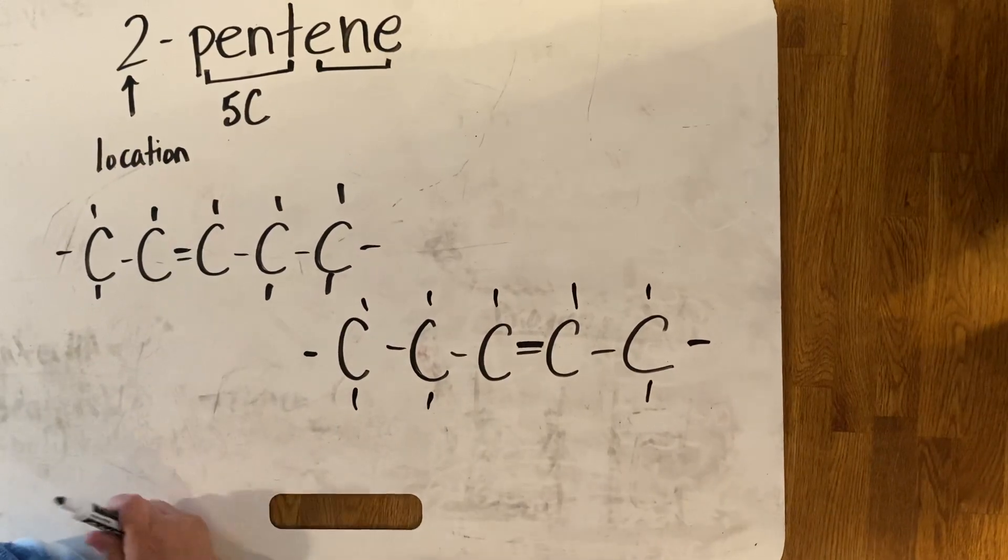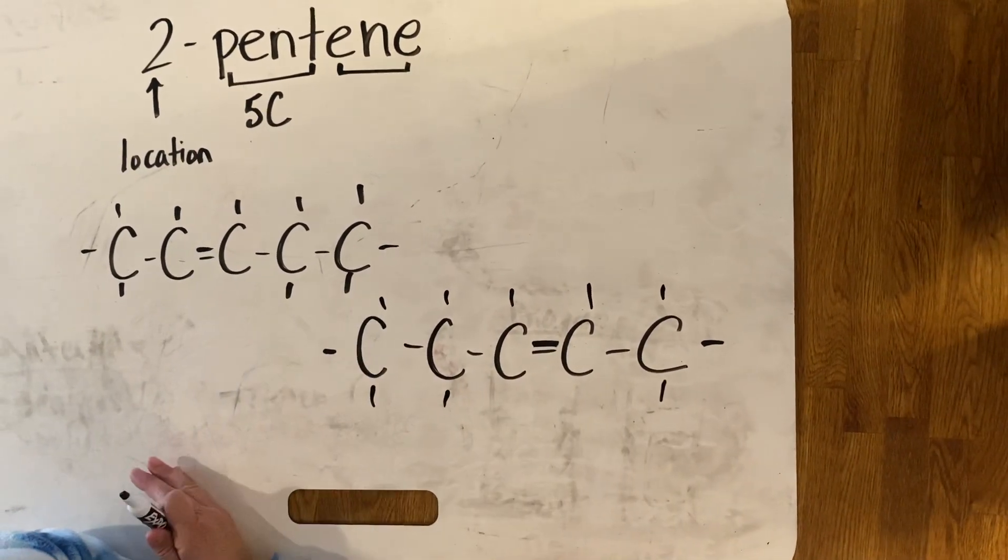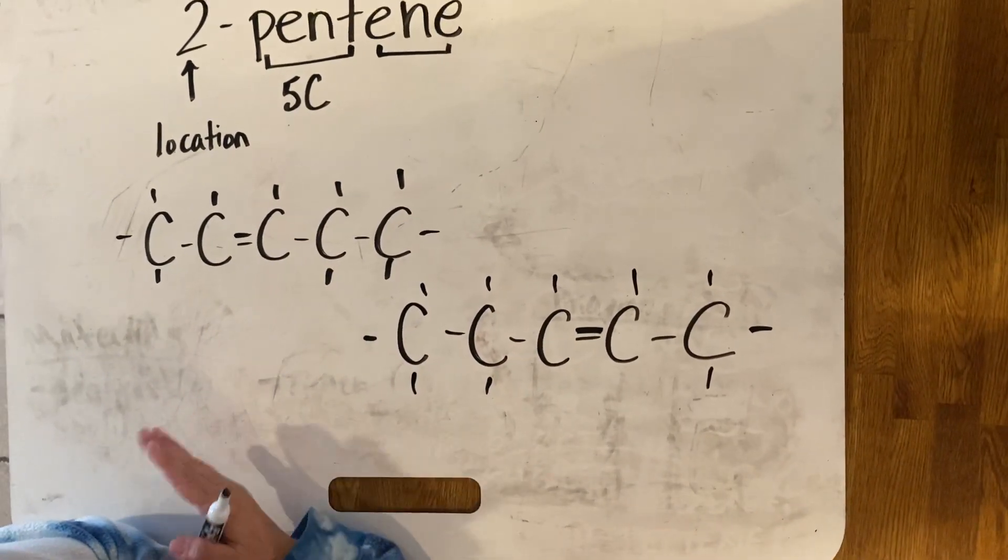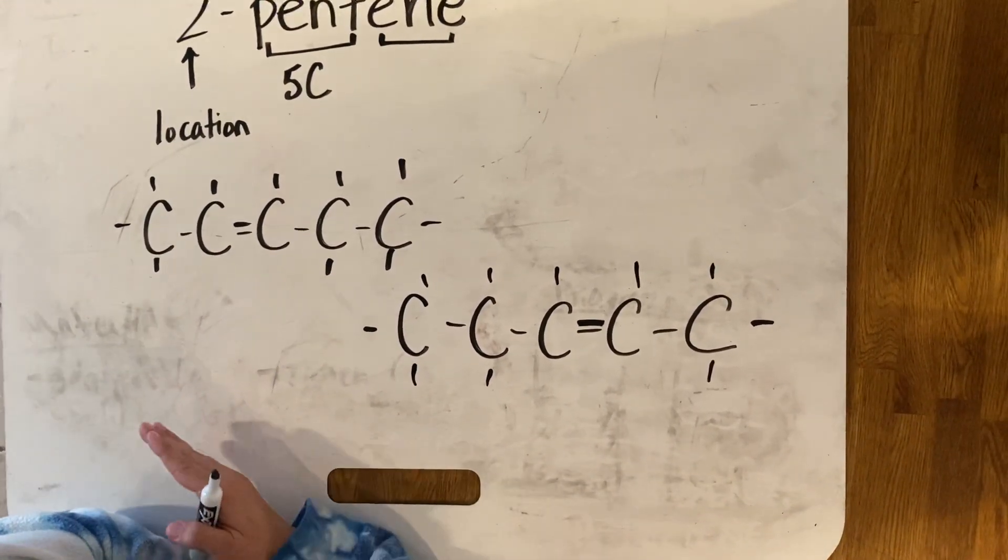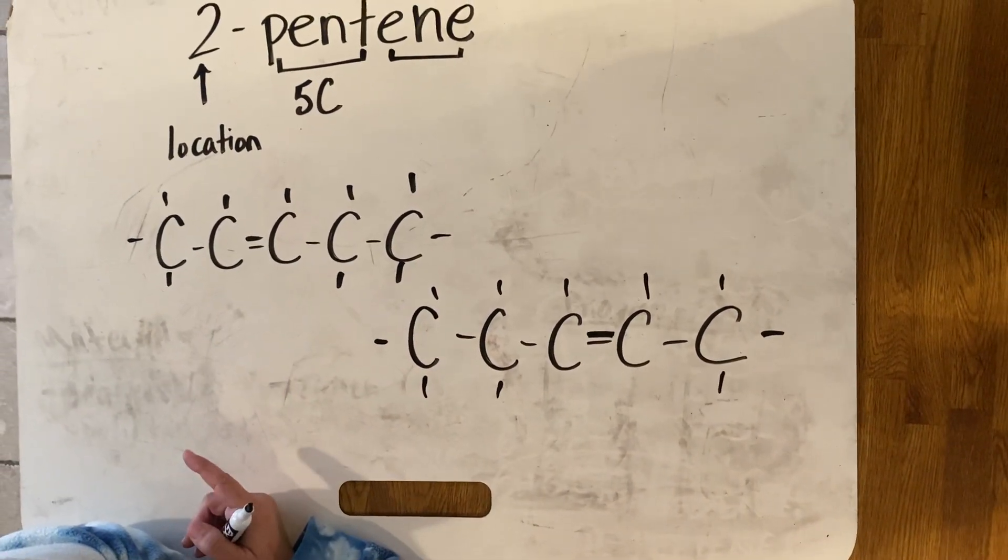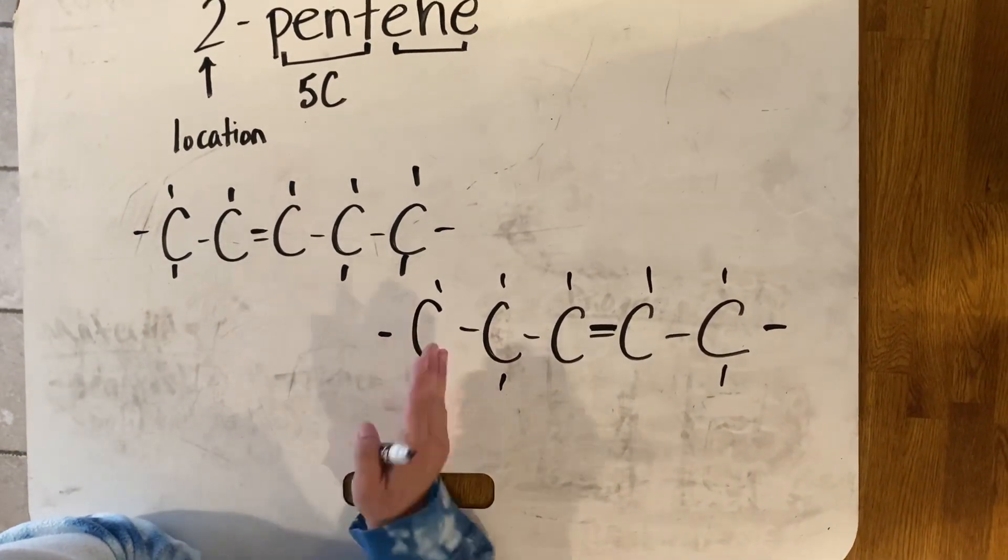If you just take a look at the difference between the two of them, they're just mirror images of each other. So it is important to always count in both directions to see where that double bond is going to be with the lowest number chain. In both of these cases, it's 2-pentene. That's the name for both of these cases.